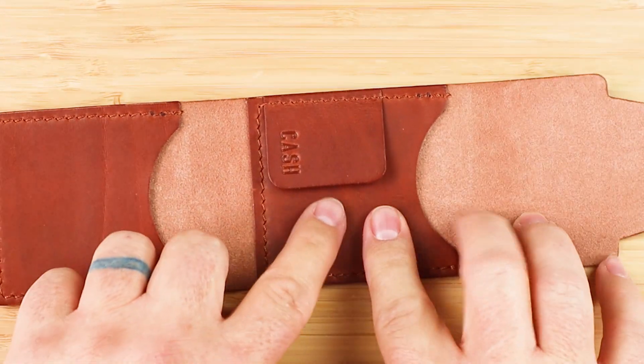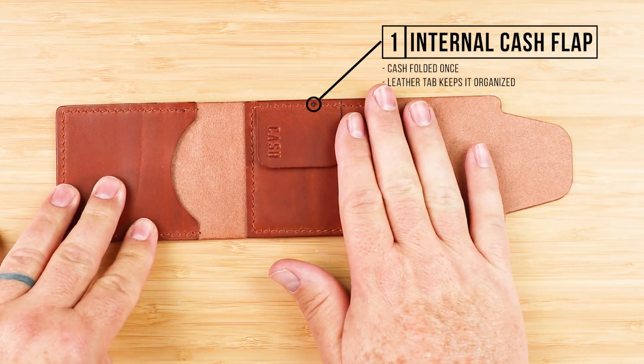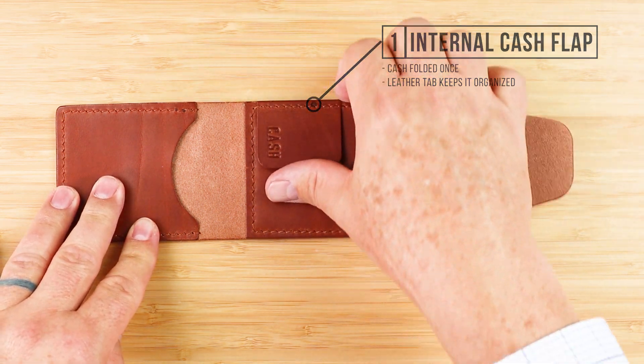And what I think is clever about this is right here. This is an internal cash flap. Cash gets folded once, lay it out, fold it once. And this leather tab keeps it organized.